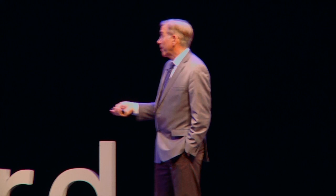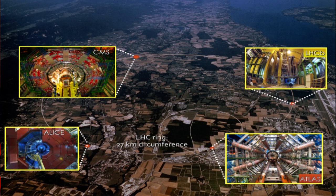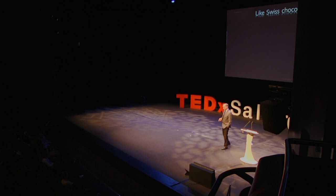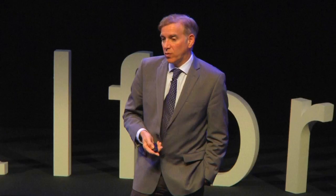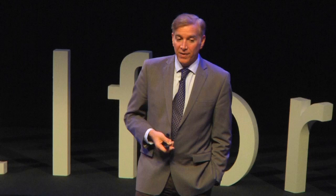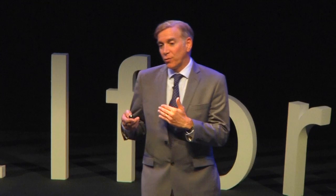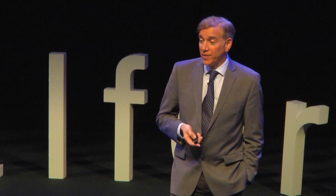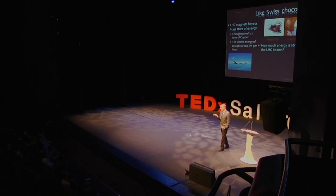There are four experiments. Two of them I'll talk about today: my experiment, CMS, and Atlas. There are also LHCB and Alice, dedicated to very specific things. The LHC magnets store a huge amount of energy — enough to melt 12 tons of copper, equivalent to the kinetic energy of an A380 at 700 kilometers per hour. The energy stored in the actual beams is equivalent to 90 kilograms of TNT, or 15 kilograms of chocolate. I bet you didn't know that chocolate has more calories than TNT.